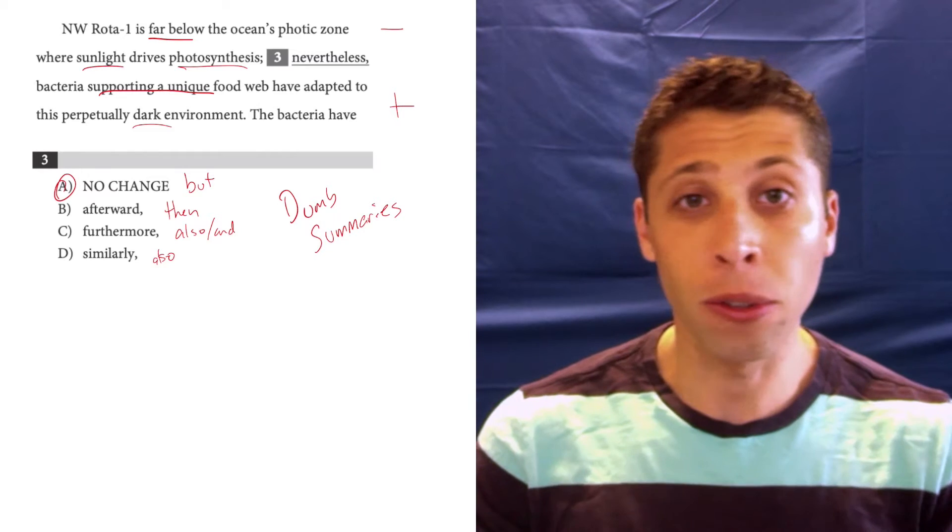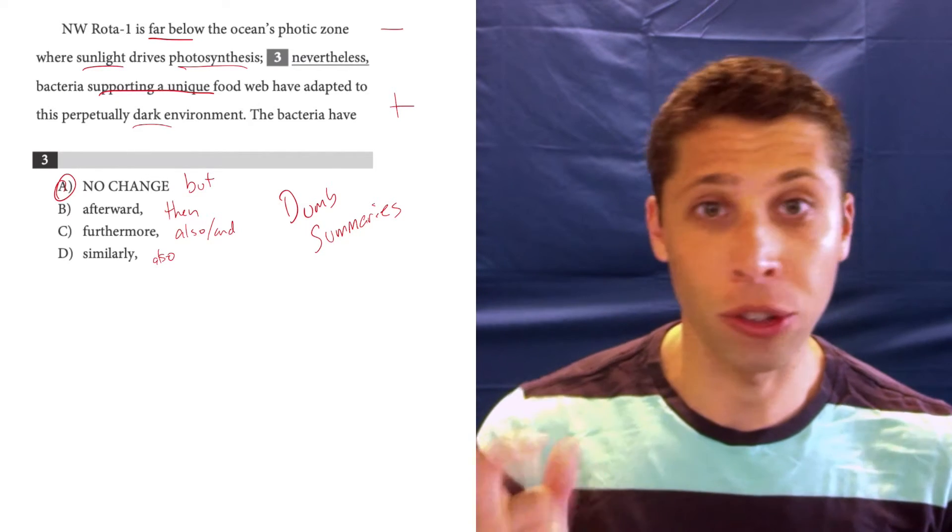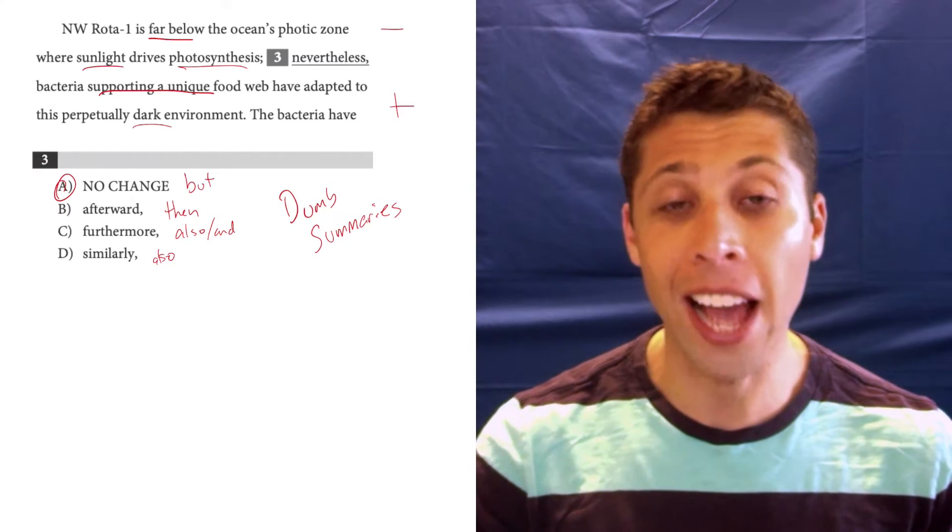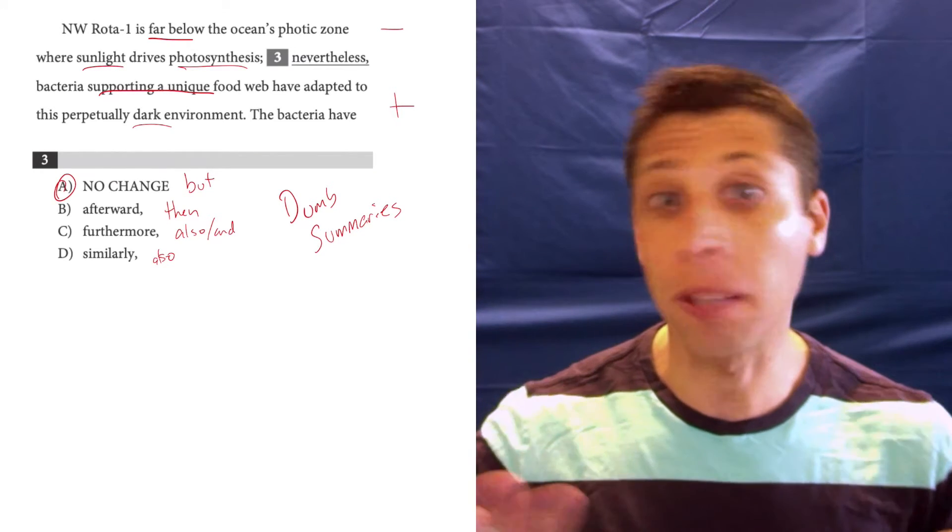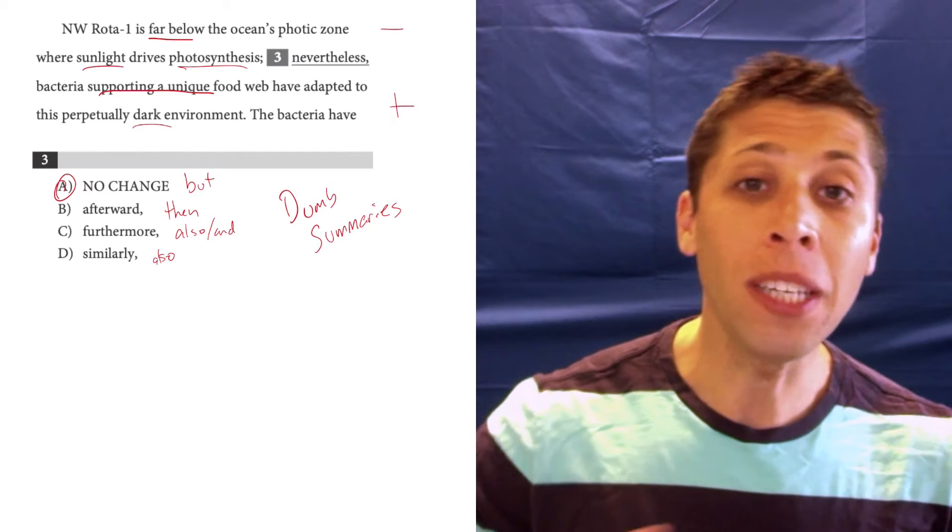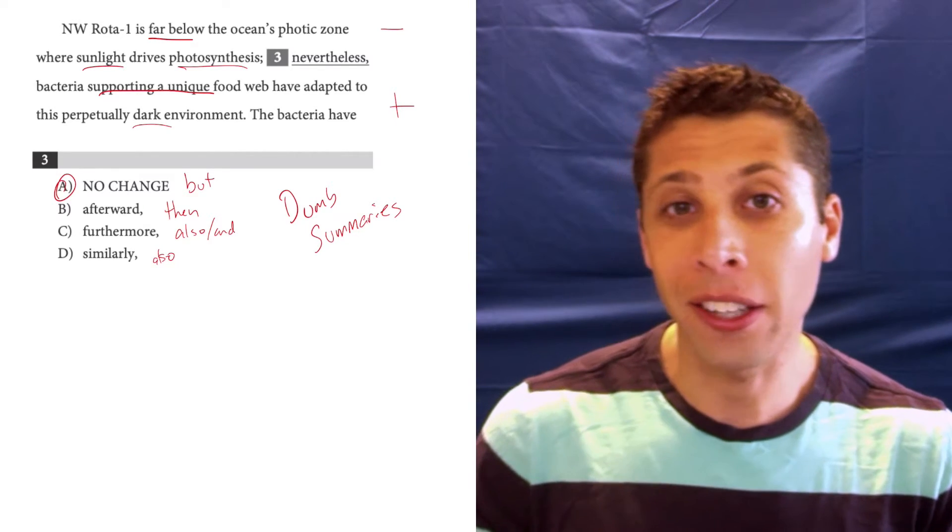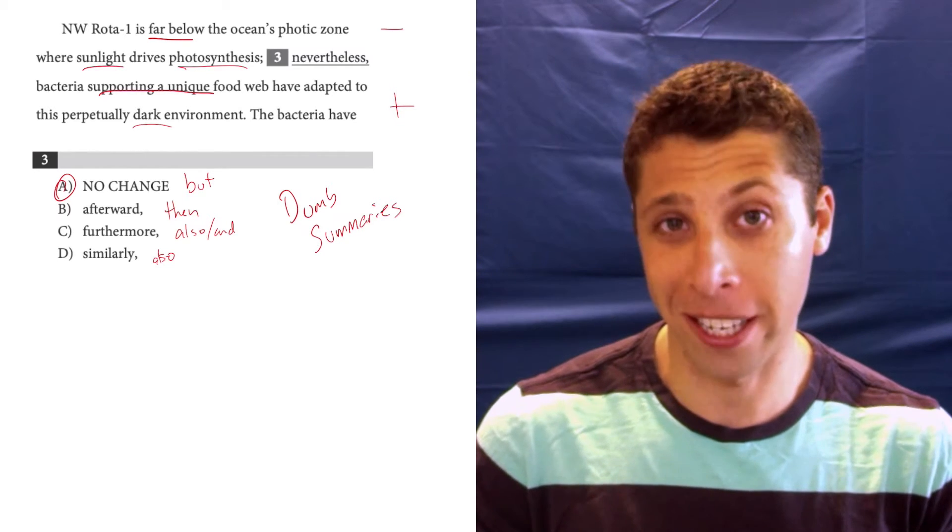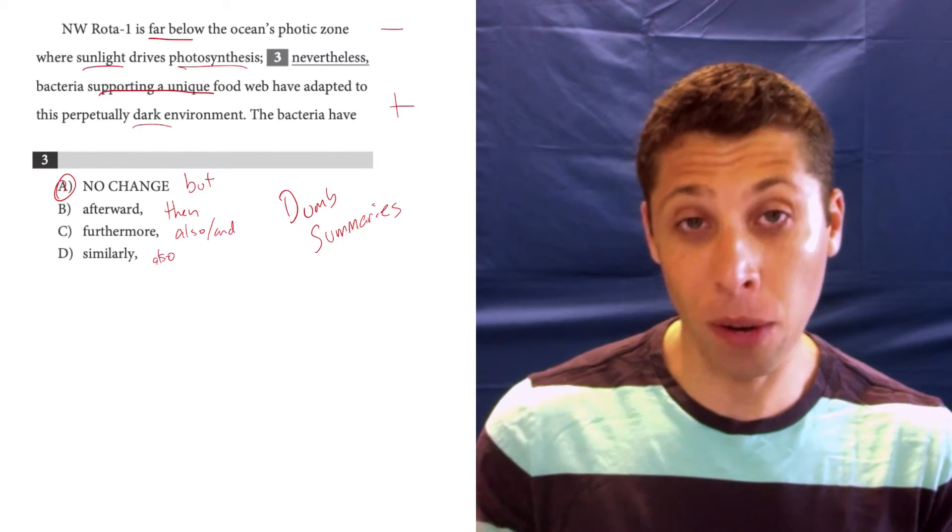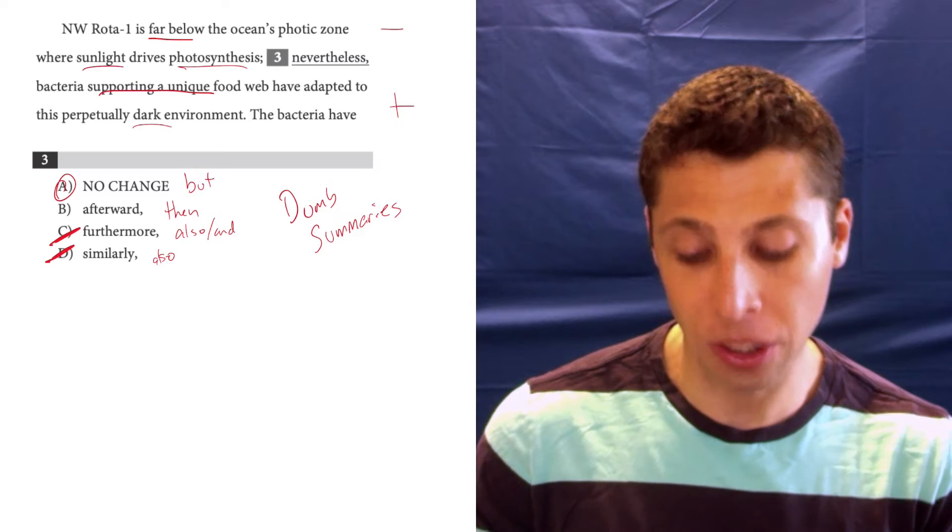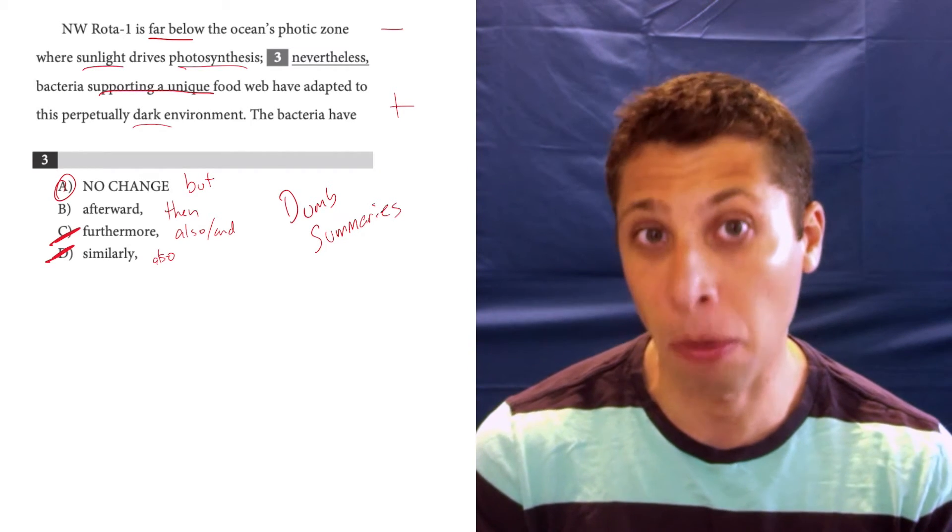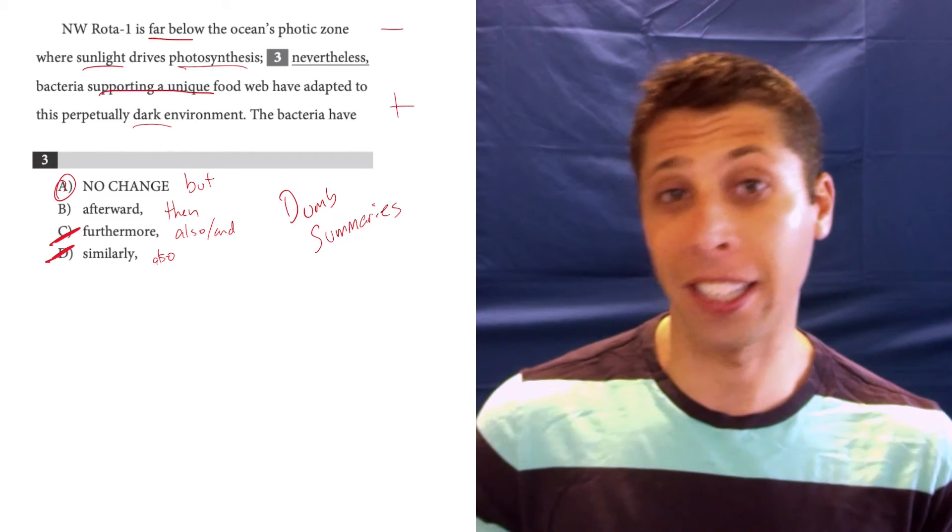And so what you want to do is you want to be able to quickly recognize which transition words correspond to the normal words that you use every day and then kind of treat them like those words. There will be cases where maybe there's two but words and one of them is right and the other is wrong. But it's very rare on the SAT. So for one thing here, I would probably be able to get rid of C and D because they both kind of have the same dumb summary. So it's unlikely that they're both right.